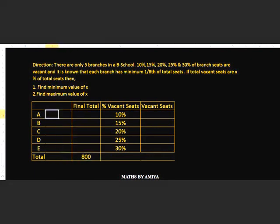One-eighth of 800 is 100, so each branch gets a minimum of 100 seats. Now find the total seats we need to distribute — that is 500. So with five branches each getting 100, we have distributed 500 seats.